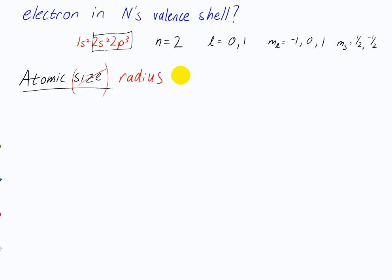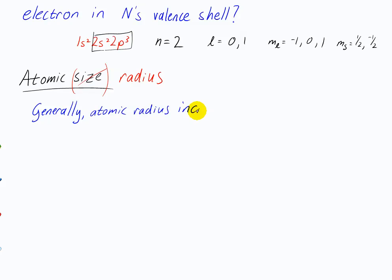Remember the shapes of the orbitals: as n gets bigger, the orbitals get further and further from the nucleus, which means the places where it's more likely to find an electron becomes further and further away. So generally, atomic radius increases with quantum number n. Pretty much anything in the first row is going to be smaller than anything in the second row, smaller than anything in the third row, and so on.